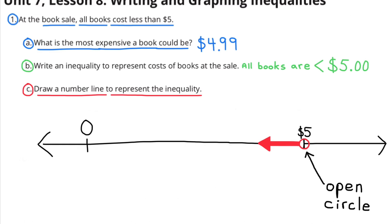C. Draw a number line to represent the inequality. Here I have drawn a number line and labeled $5, with an open circle at $5 and the arrow pointing to the left, meaning all books are less than $5.